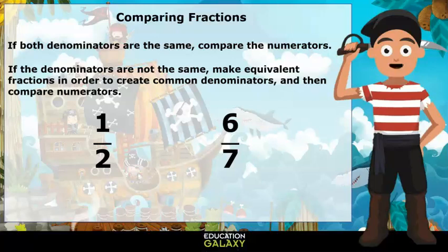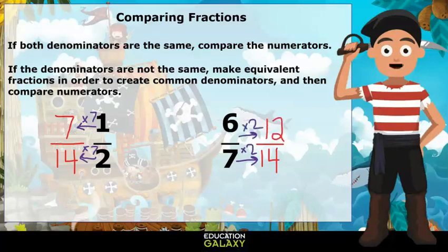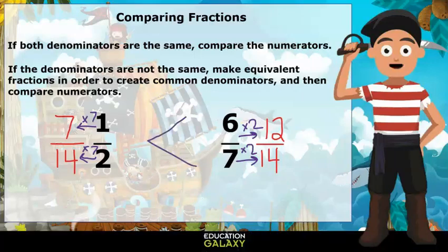The least common multiple of 2 and 7 is 14. For the first fraction, since 2 times 7 is 14, we need to calculate 1 times 7. We get 7. And for the second fraction, since 7 times 2 is 14, we need to calculate 6 times 2, which is 12. So 6 sevenths is equal to 12 fourteenths. Now we can compare 7 fourteenths with 12 fourteenths. Since 7 is less than 12, 1 half is less than 6 sevenths.